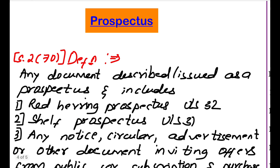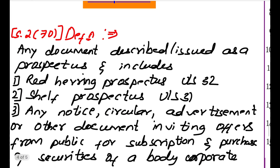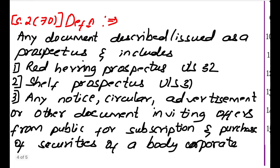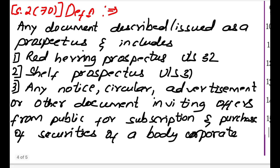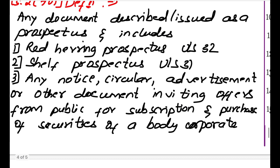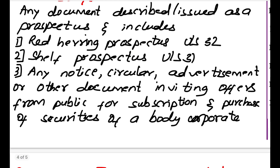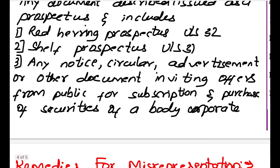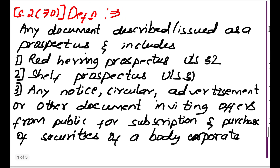The next important concept is Prospectus. According to section 2 clause 70, it is defined as any document described or issued as a prospectus, and includes Red Herring Prospectus under section 32, Shelf Prospectus under section 31, and any notice, circular, advertisement, or other document inviting offers from the public for subscription and purchase of securities of a body corporate. In simple words, a prospectus is an advertisement inviting people to buy shares — it includes every detail of the company so that people can see it and buy shares.